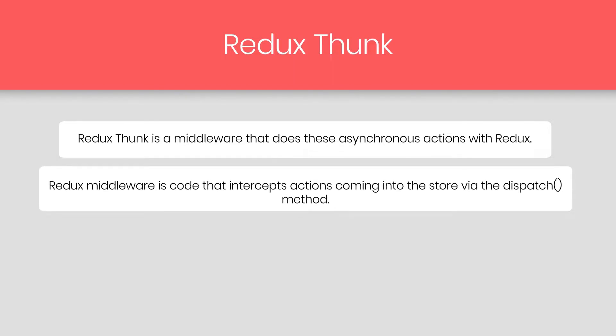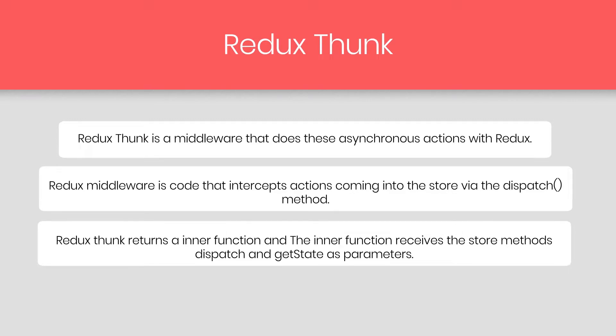Redux middleware is a code that intercepts actions coming into the store via the dispatch method. Redux Thunks return an inner function, and the inner function receives the store methods dispatch and getState as parameters. For example, let's say you create an action creator and inside that you call an API. An API may take some time to get the data from the server. In that case, you have to make your application asynchronous. The Thunk can be used to delay the dispatch of an action or to dispatch only if a certain condition is met.